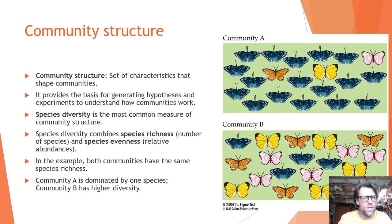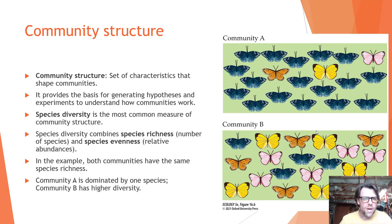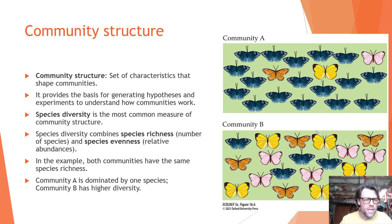Community structure is a set of characteristics that shape communities. It provides the basis for generating hypotheses and experiments to understand how communities work. Ecologists consider community structure a lot when designing their studies. Species diversity is the most common measure of community structure.